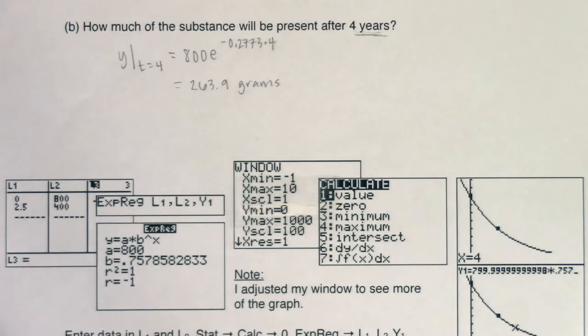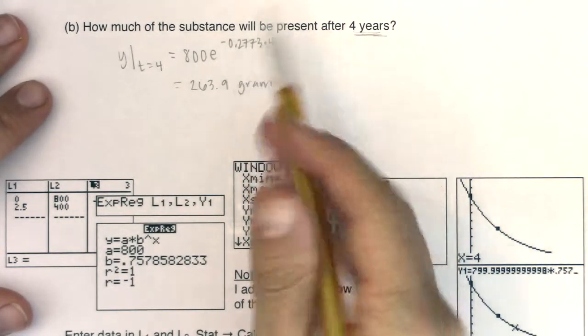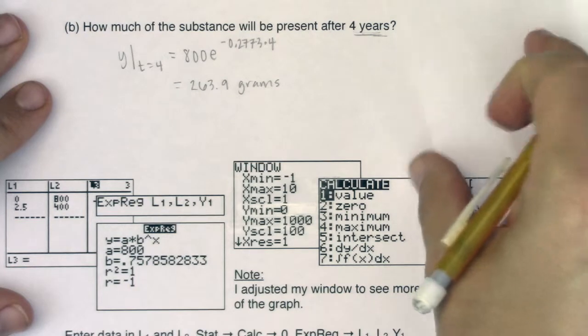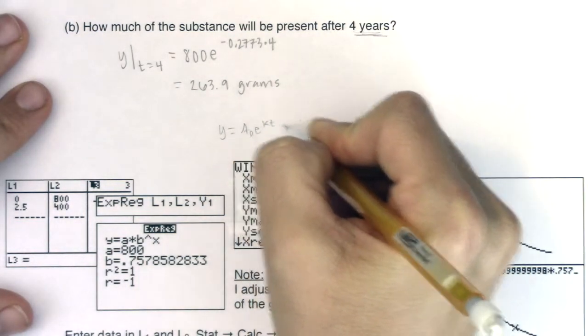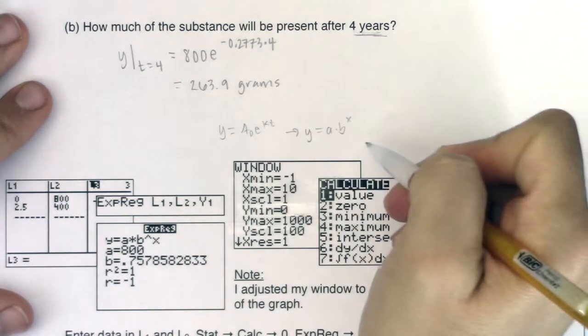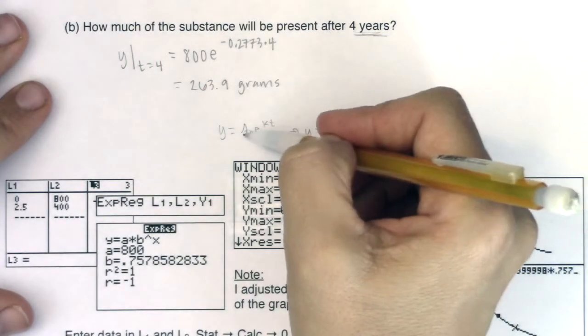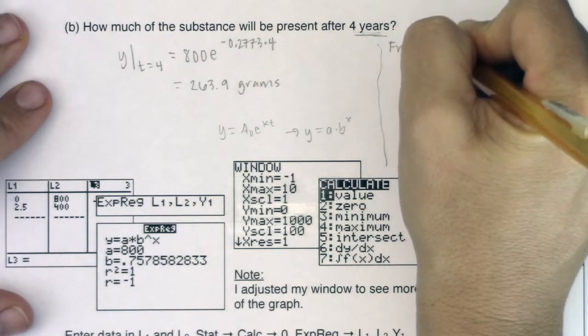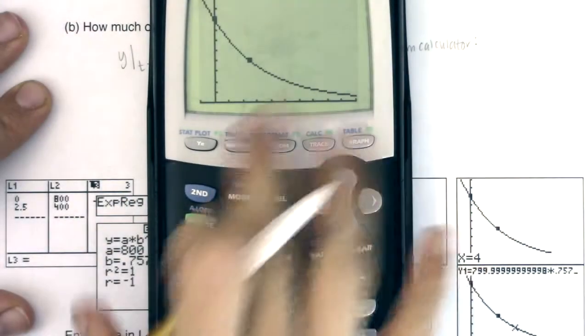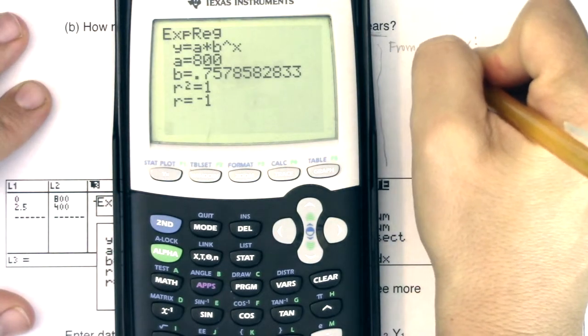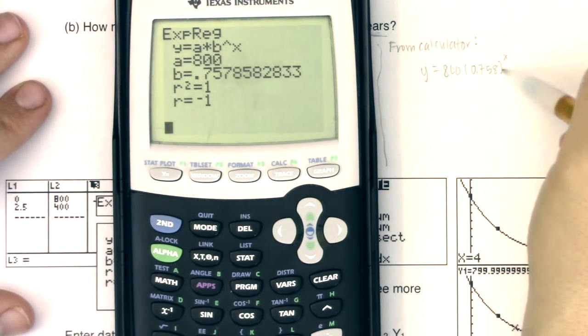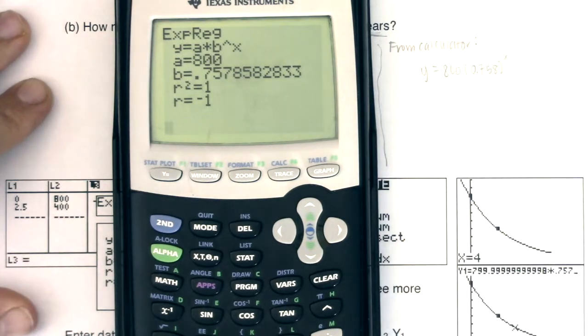Okay, we're back. I want to show you how the equation or the model you got from your calculator really is this same model here. I showed you in example one how we could go from an exponential model with base e over to a base b model. That's when we took a look—this was example three—we went from A naught e to the kt to a times b to the x. Now I'm going to go the other way. We're going to start here and go back to this version. It's wonkier to go back. We've got from our calculator our model: y equaling 800 times 0.758 to the x.